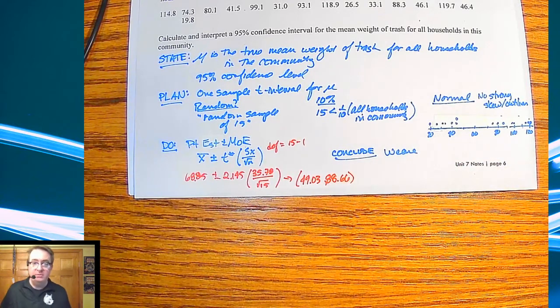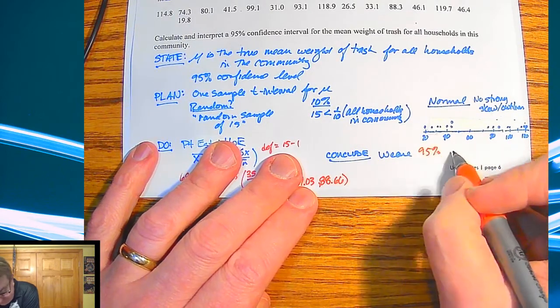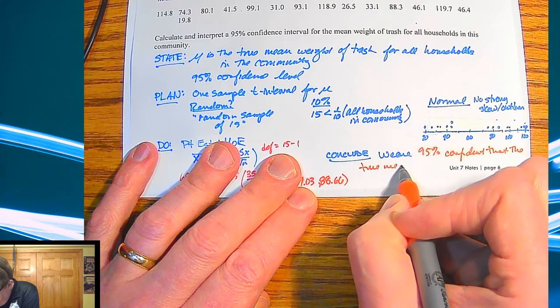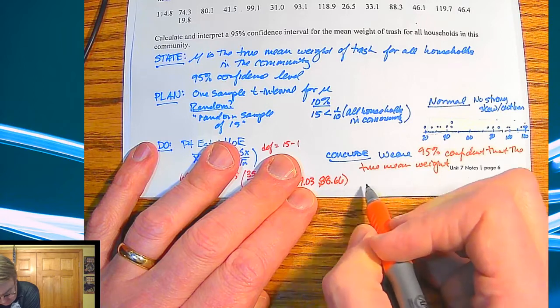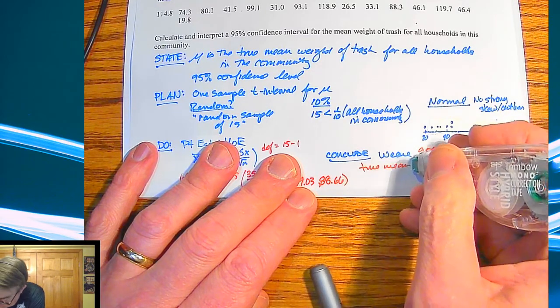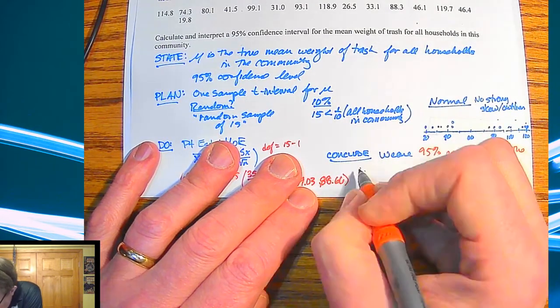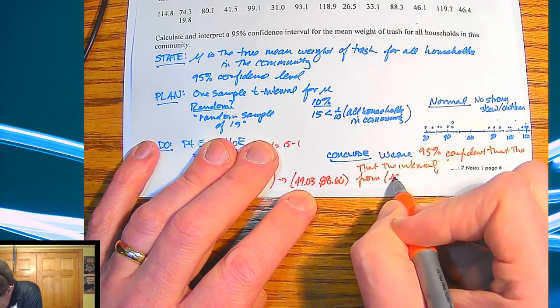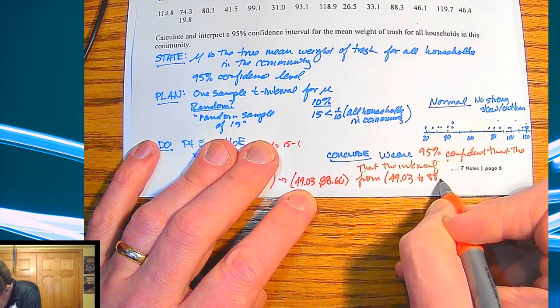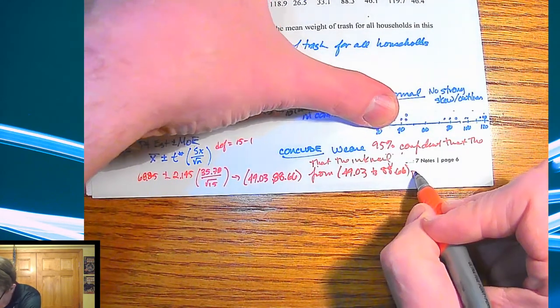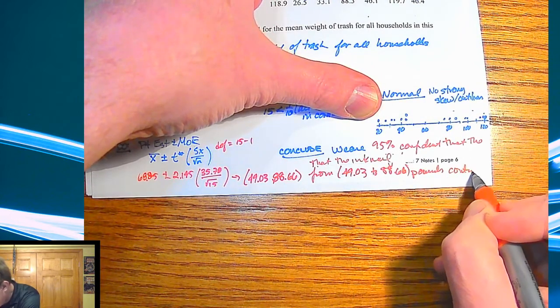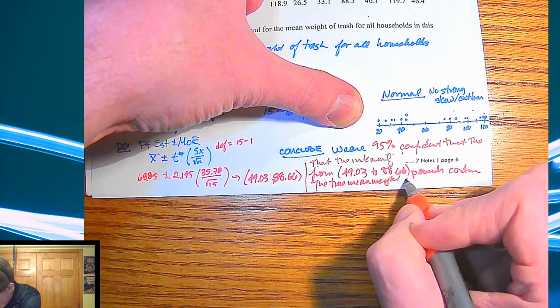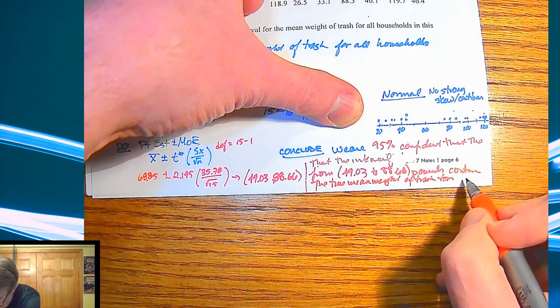So for your conclusion here, we are 95% confident that the interval from 49.03 to 88.66 pounds contains the true mean weight of trash for all households in the community.